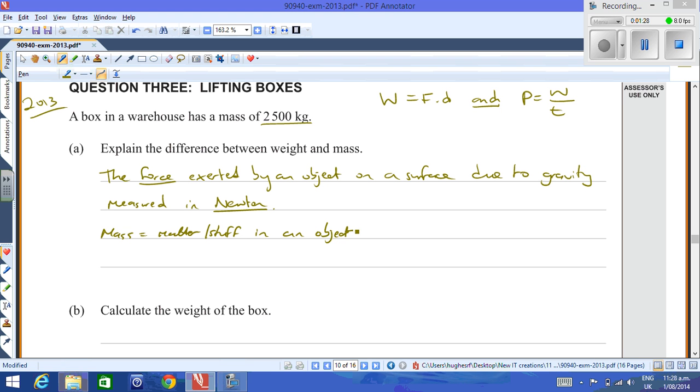Your weight changes from planet to planet as the force of gravity changes, but your mass always stays the same and your mass is measured in kilograms. So in this case, the mass of the box is equal to 2,500 kilograms.